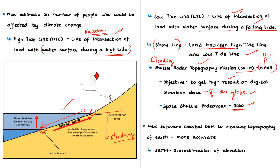The recent study is based on a new modeling approach for measuring the topography of Earth. The study used a new software called Coastal DEM, meaning Coastal Digital Elevation Model. A digital elevation model gives the three-dimensional graphical image of a surface. The authors claim that mapping based on SRTM overestimates the elevation of land surfaces, meaning actual elevation is less than what SRTM maps show.